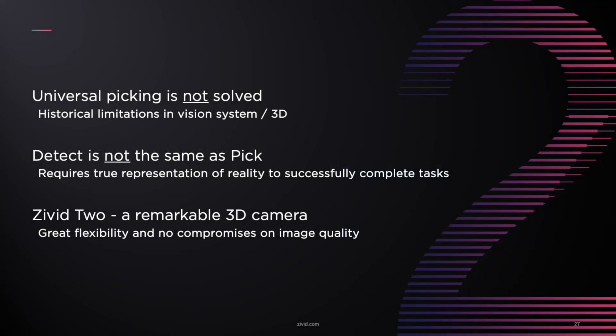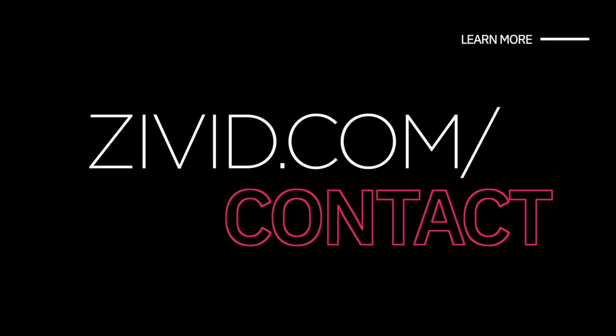To summarize: universal picking is not yet solved, due to historical limitations in the vision system, and that is the part we are addressing. Detection is not the same as picking — you need to detect correctly, but you also need a true representation so that picking and placing don't fail. The Civi 2 is a remarkable 3D camera that gives great flexibility without any compromise on image quality. That was everything — I'm happy to answer questions.